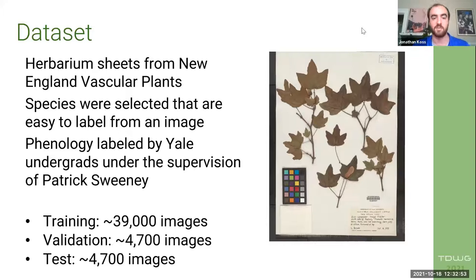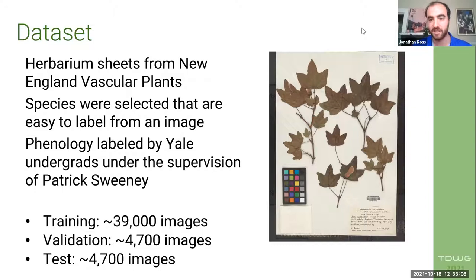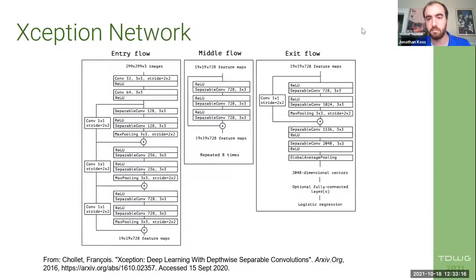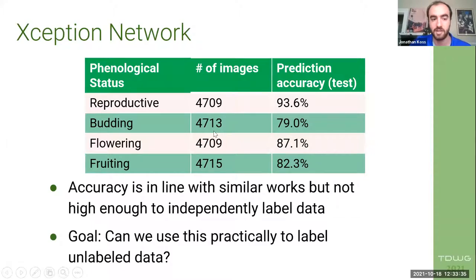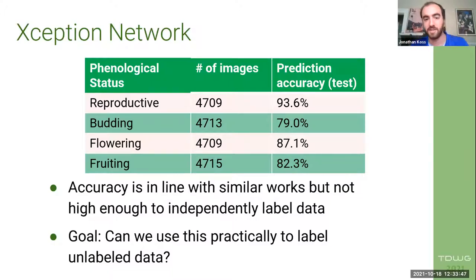We used a dataset of New England vascular plants that had already been labeled by hand by people trained to label the reproductive state of herbarium sheets. We had about 50,000 images in total, split into training and test sets. Based on an Xception network shown to perform well at this task, we trained four of these networks — one for each question we had to answer: whether it was reproductive or not, whether it was budding or not, and so on. Each network produced a binary output of yes or no. Our test accuracies were around 80 to 90%.